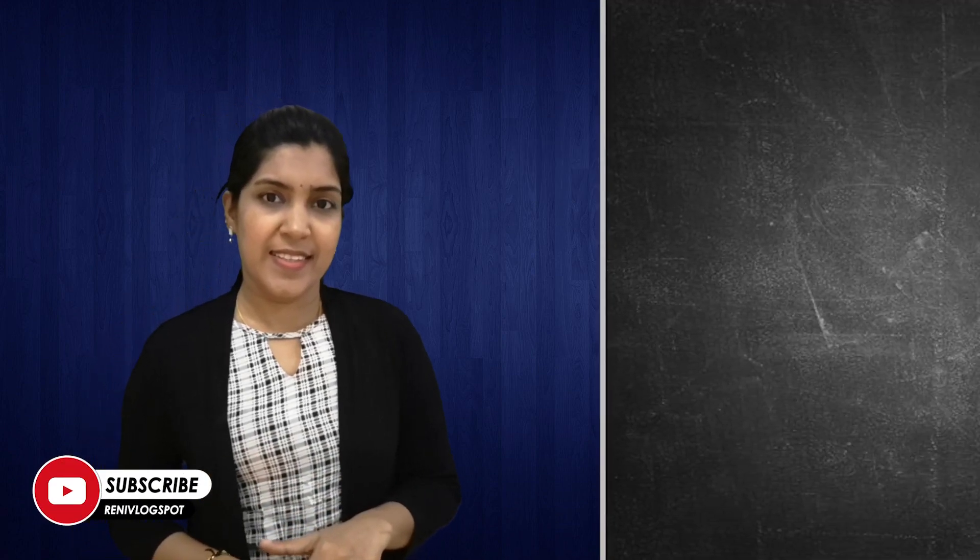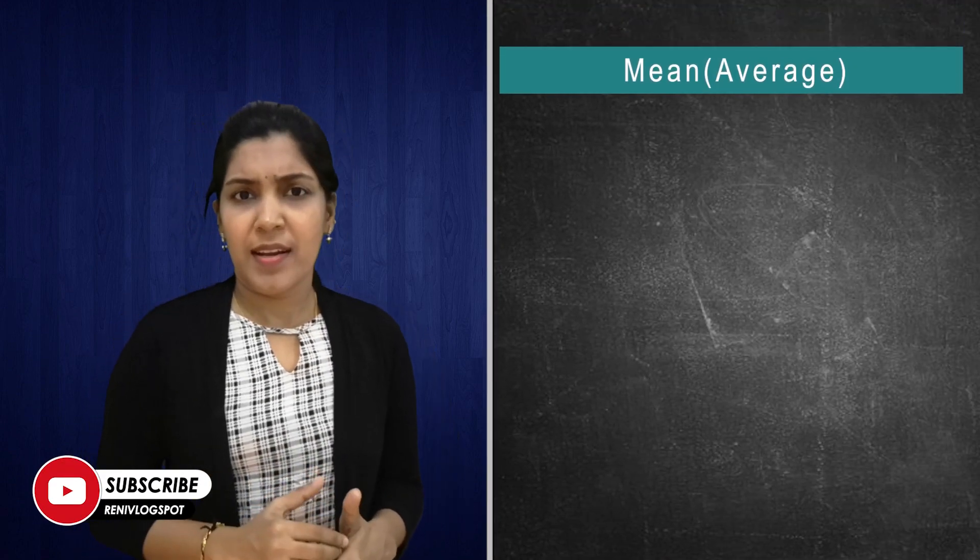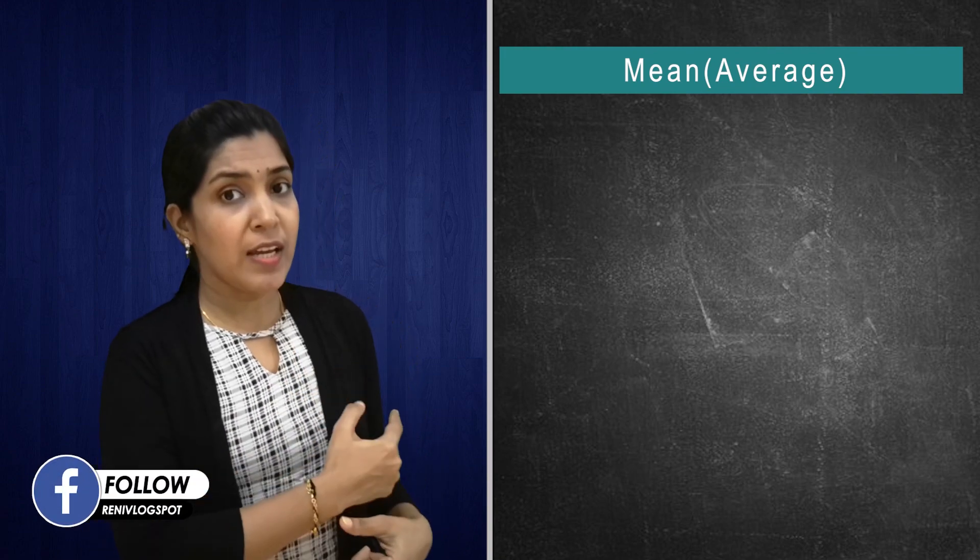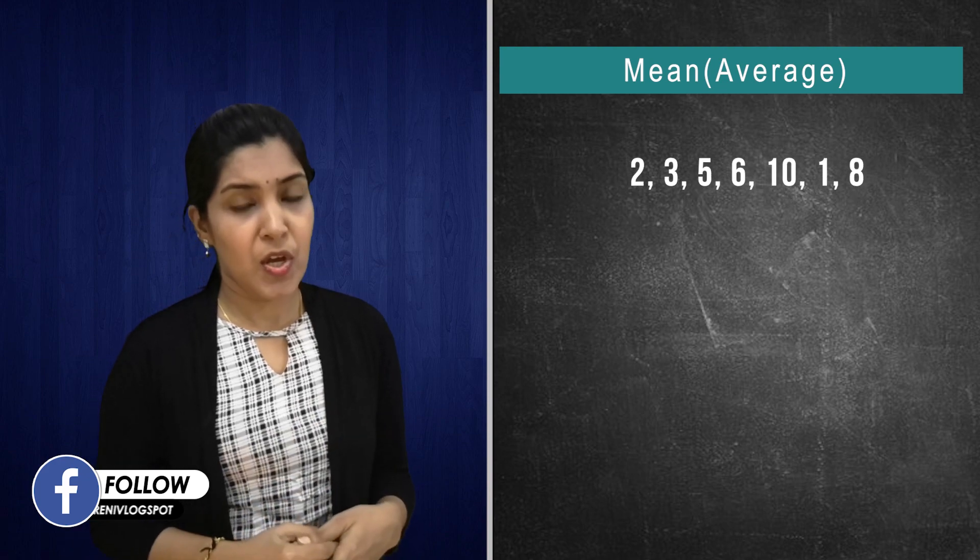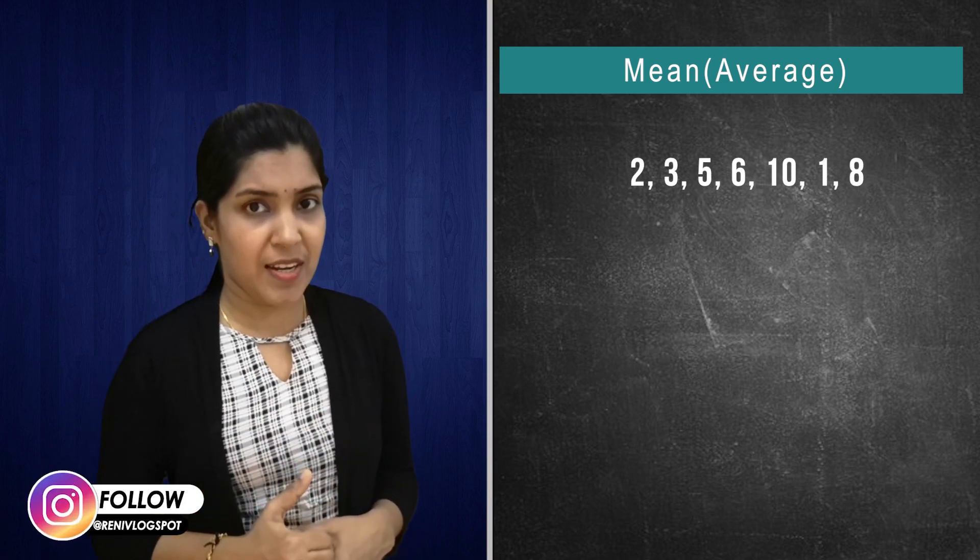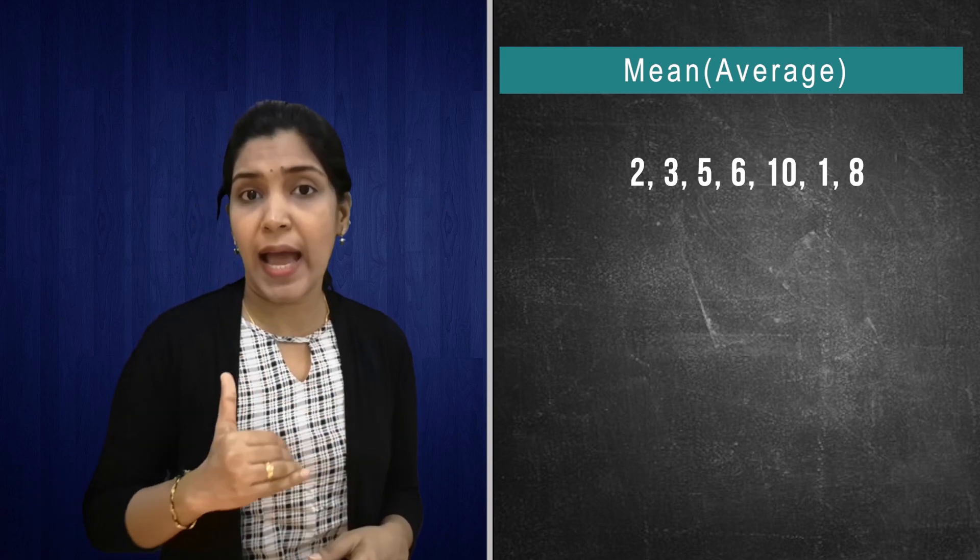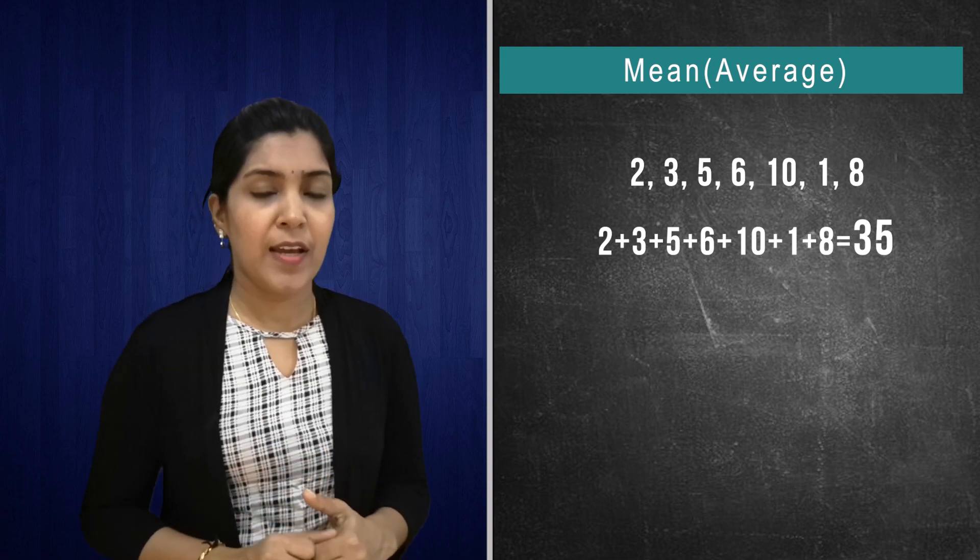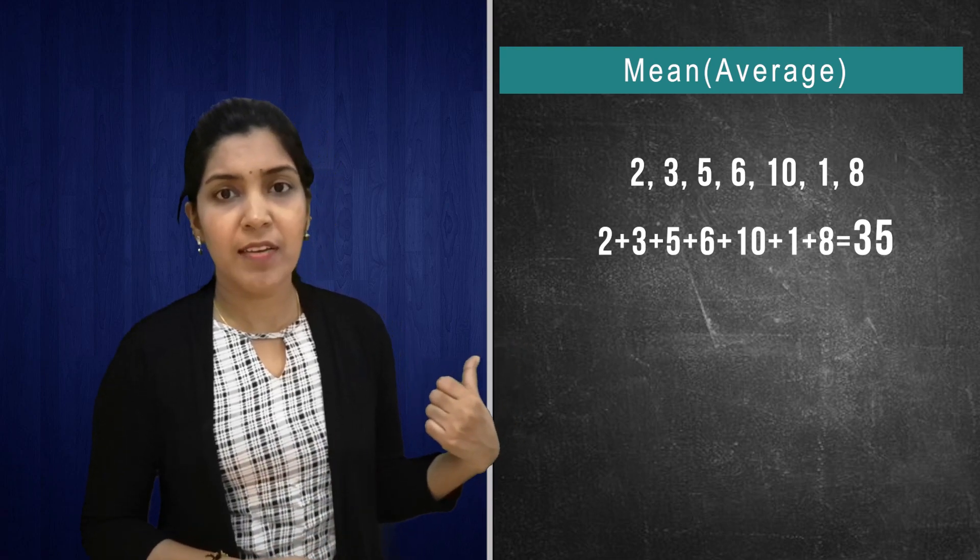First one, what do you mean by mean? Mean, it is the average of the given sets of data. So here we have seven numbers. How to find the mean or average of the given number? First you have to add the given numbers. First you have to find the sum. So what is the sum of the given number?